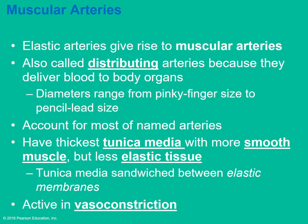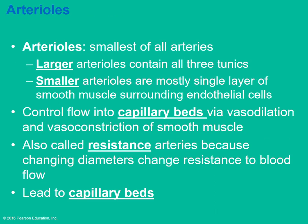Muscular arteries are a little smaller than elastic arteries and help distribute blood to various tissues after branching. Most named arteries are muscular arteries. They have less elastic tissue but a lot of smooth muscle and play a huge role in vasoconstriction. Arterioles are the smallest of all the arteries and regulate the amount of blood flow into the capillary beds. They are sometimes called resistance arteries because they can change diameter, playing a role in resistance to blood flow.